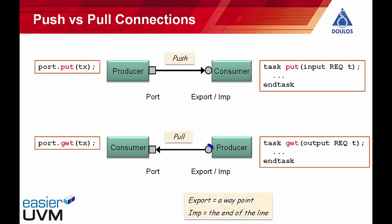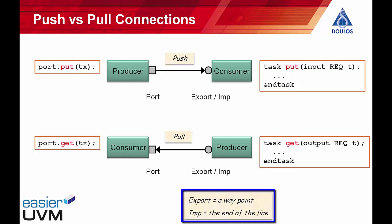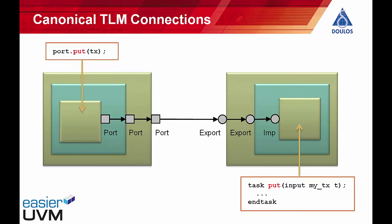A circle symbol indicates either an export or an imp. The difference is that an export is a waypoint in a series of TLM calls, while the imp marks the end of the line — the place where the task or function is actually implemented. If a component has an export, it passes the transaction to a child component for processing. If a component has an imp, it must itself provide an implementation of the corresponding task or function. This is the canonical diagram for TLM connections — it's very important that you can visualize this diagram to have a good intuitive feel for how TLM connections work.